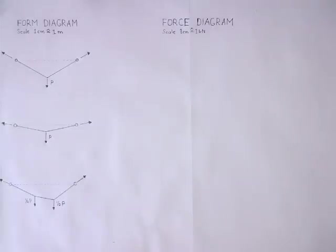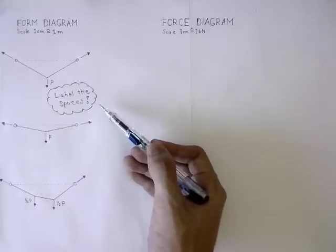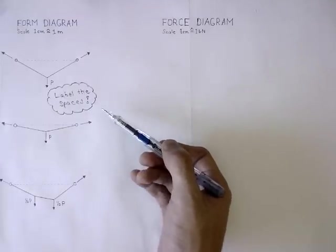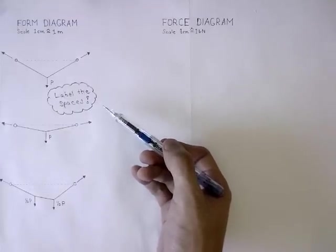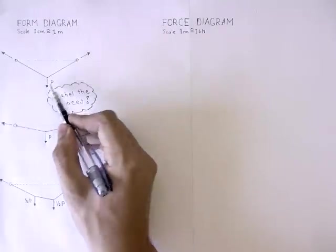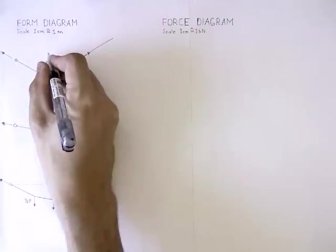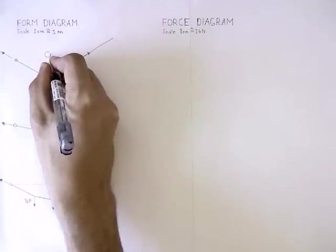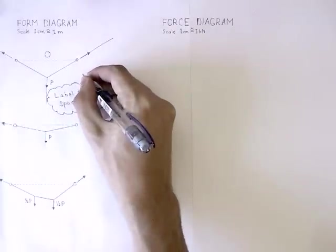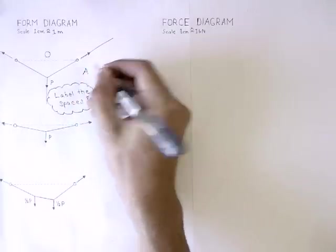This tutorial will be shown on these simple funicular systems. Every time you do an exercise in graphic statics, one of your first steps should be labeling the spaces. Look for the forces and imagine them as separators. The inside space is usually marked as O. Now label the other spaces in the clockwise direction.